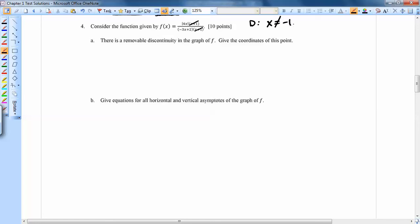the denominator x can't be negative 1. And the other one that it couldn't be is 2 thirds, because if you plug in 2 thirds right there, you're going to get 0.